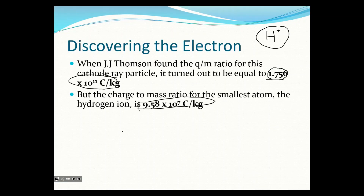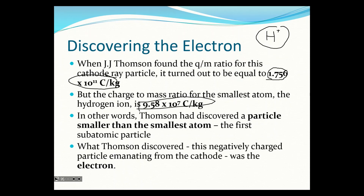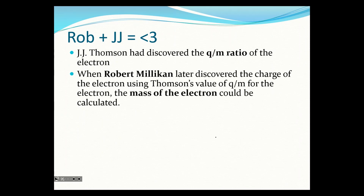Thompson was able to determine there was something smaller than the smallest atom — the first subatomic particle. What Thompson discovered was a negatively charged particle emanating from the cathode: the electron. He had this charge-to-mass ratio and knew the electron was smaller than a hydrogen atom. Later, Robert Milliken did his oil droplet experiment and discovered the actual charge of the electron. Once you have the charge-to-mass ratio and the charge, you can calculate the mass of the electron.